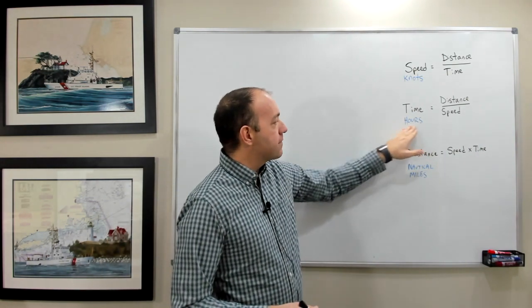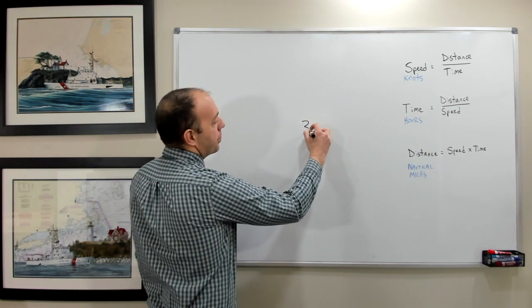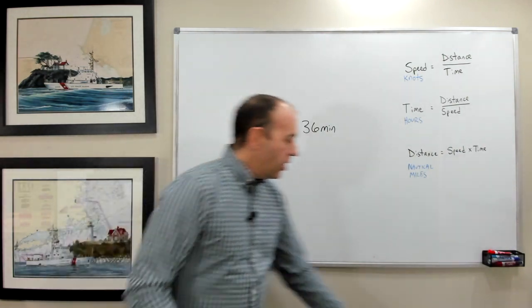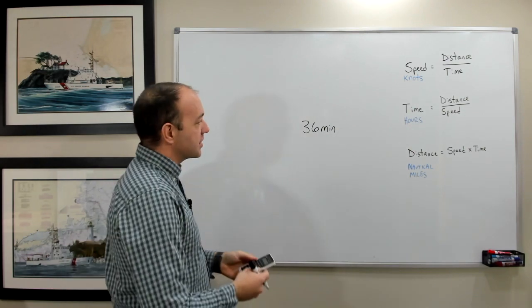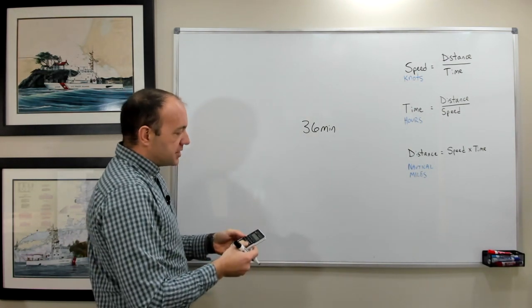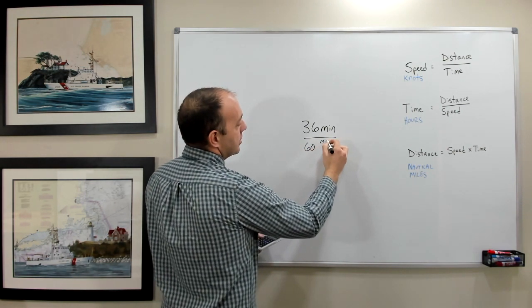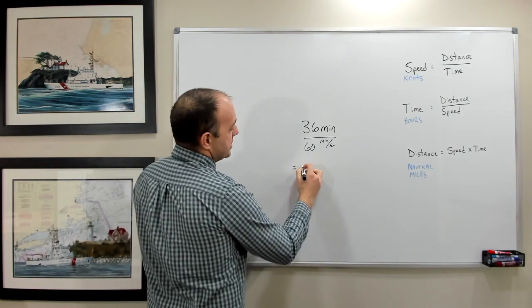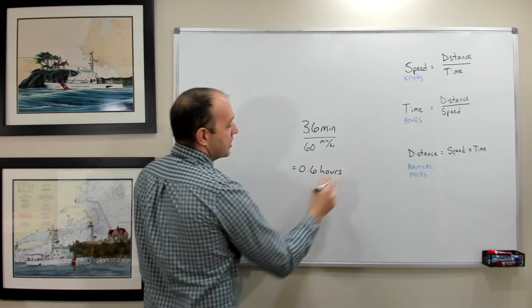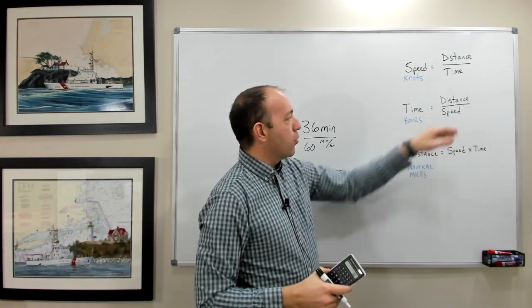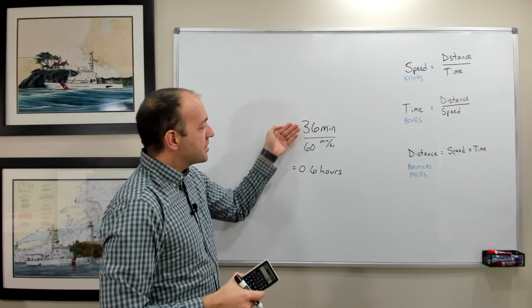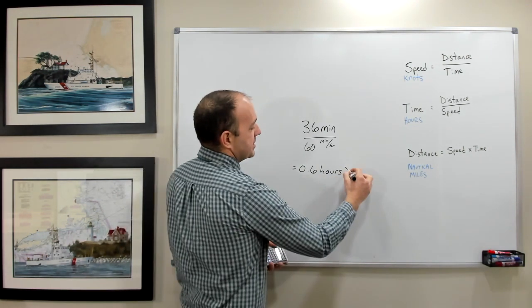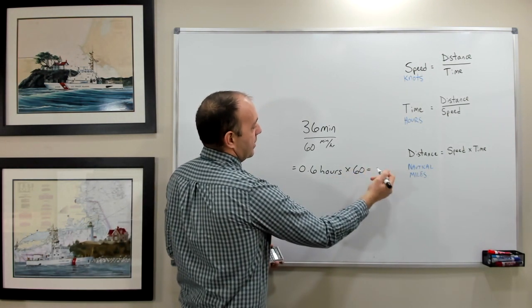By the way, if you ever needed to convert hours, for instance, if you did have 36 minutes, how do we convert that to hours? You're always going to either multiply or divide by 60 to convert these things. But to convert from minutes to hours, you simply divide by 60 minutes per hour. And 36 divided by 60 is equal to 0.6 hours. So that way you can use the hours in your formula if you need to. So if they give you minutes, divide by 60 to get the hours. And likewise, if you had the hours, multiply by 60 to get the minutes.